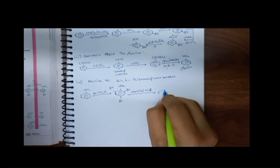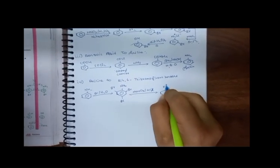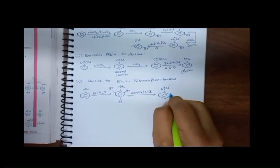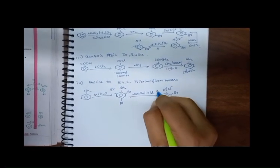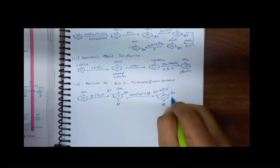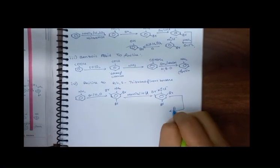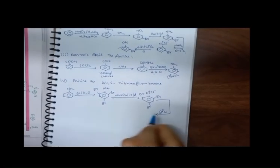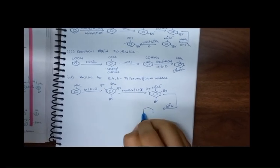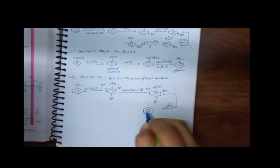Now treat with NaNO2/HCl. This gives Benzene Diazonium Chloride with Bromine still at the 2, 4, 6 positions — the Bromine is not going anywhere. Treat this with BF4; Cl is replaced by N2BF4. Bromine remains as is.